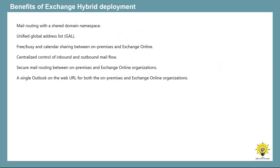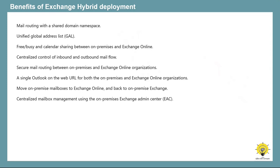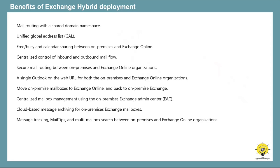In hybrid deployment, on-premise and Exchange Online users use the same URL to connect to their mailboxes over the internet. You can migrate on-premise mailboxes to Exchange Online and even onboard them back to on-premise. Hybrid deployment enables centralized mailbox management in on-premise Exchange admin center, so an administrator can manage both on-premise and migrated mailboxes from there. On-premise users can also take benefit of online archiving. Additionally, hybrid deployment supports cross-premises message tracking, mail tips, and message search. On-premise users can use Microsoft Teams in hybrid deployment, though an administrator will need to meet certain prerequisites to achieve this.